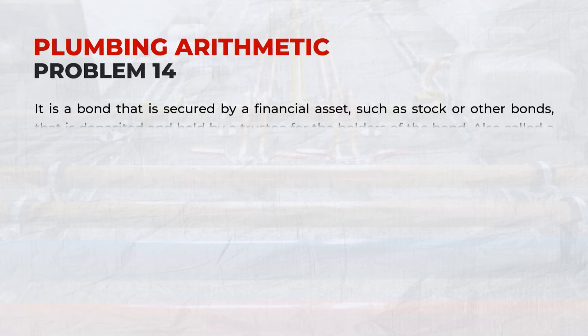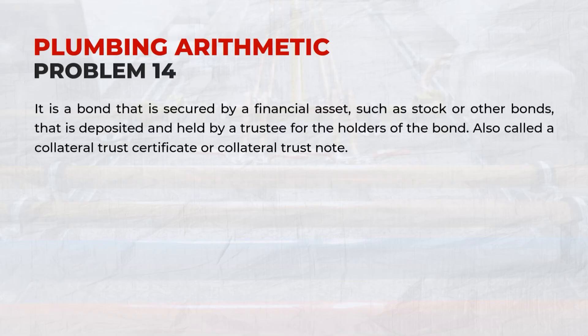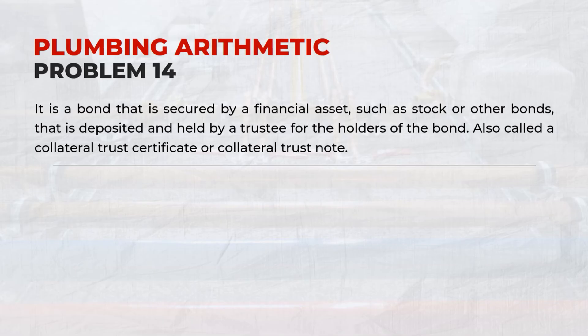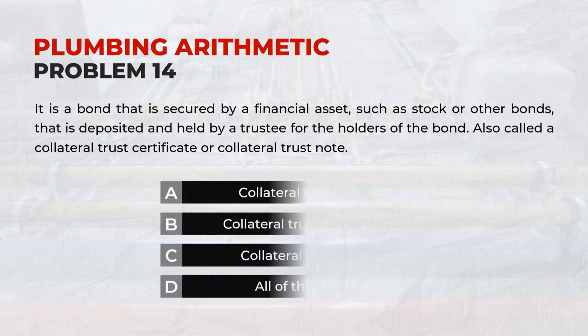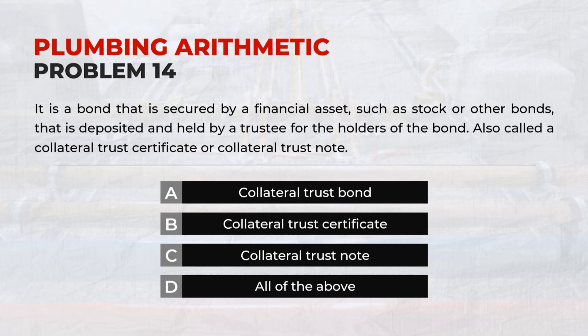It is a bond secured by a financial asset, such as stock or other bonds, that is deposited and held by a trustee for the holders of the bond. Also called a collateral trust certificate or collateral trust note. Answer: A. Collateral trust bond.